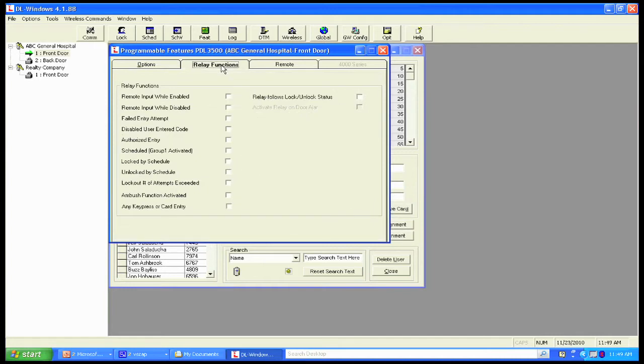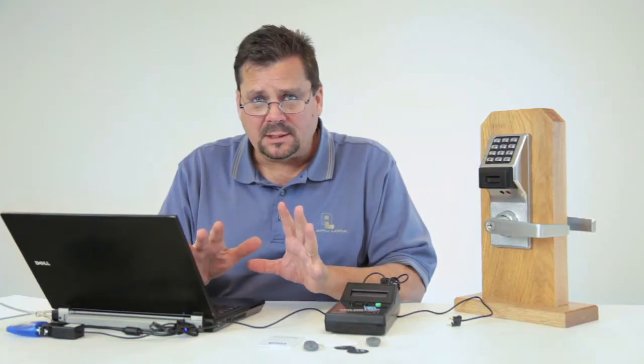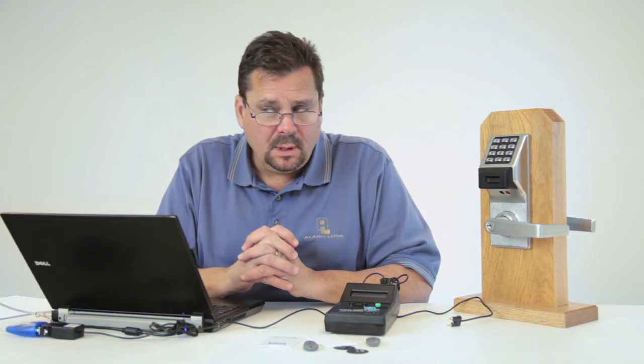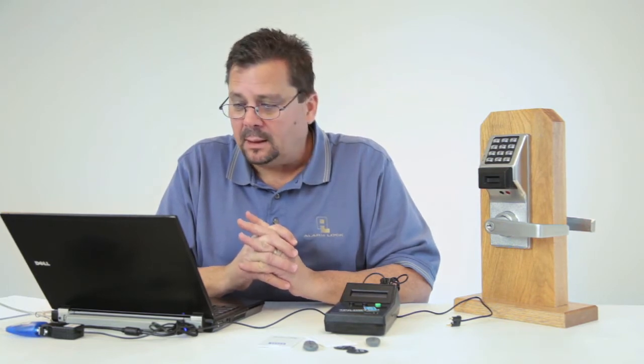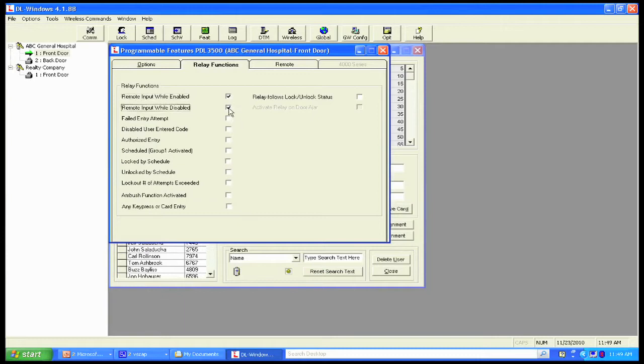This tab here, relay functions, means whatever I want the relay to perform. Keep in mind that virtually all of our locks, there are two that don't have a relay, but virtually all of our locks have a form C dry contact in it, meaning that I can wire that to some other type of product. We can have it shunt an alarm system, we can have it activate a CCTV camera. And what I want to be able to do is I just simply choose what function. Failed entry attempt, what I want to have happen is that upon a failed entry attempt, the camera goes off. Or lock by schedule, unlock by schedule. These two functions simply means I have it wired to a CCTV camera. I want to trip it, and I want to turn it off. I want to turn an alarm system on and off.